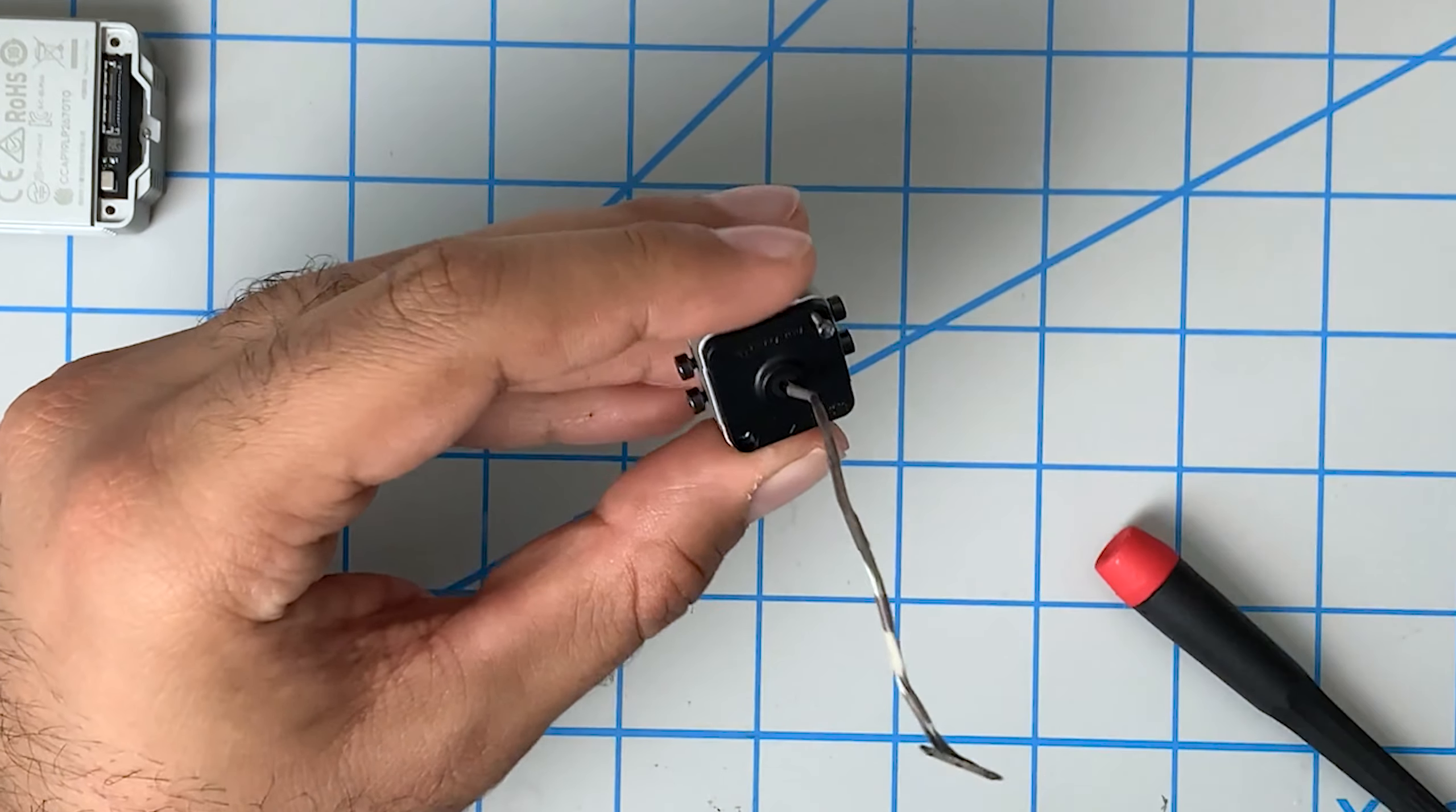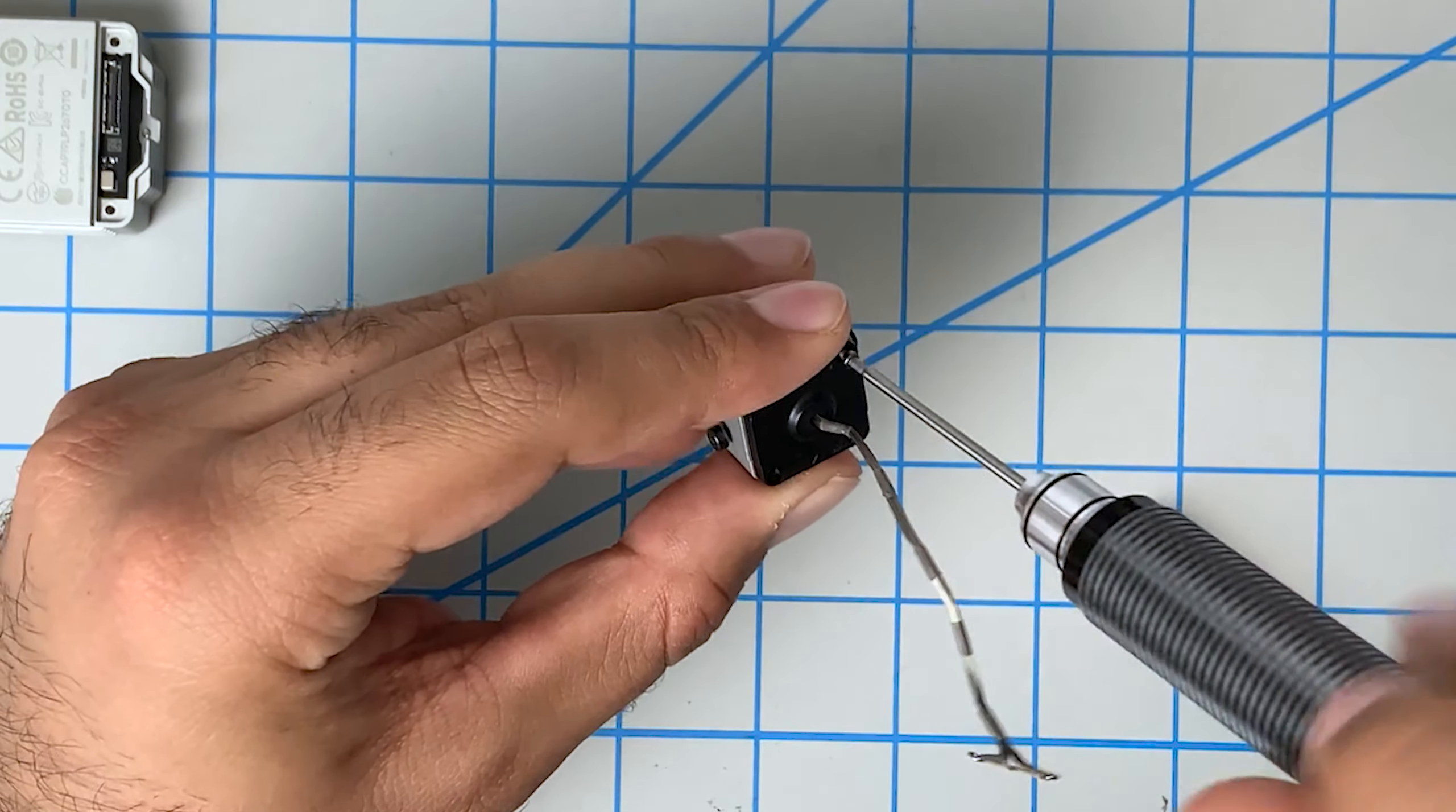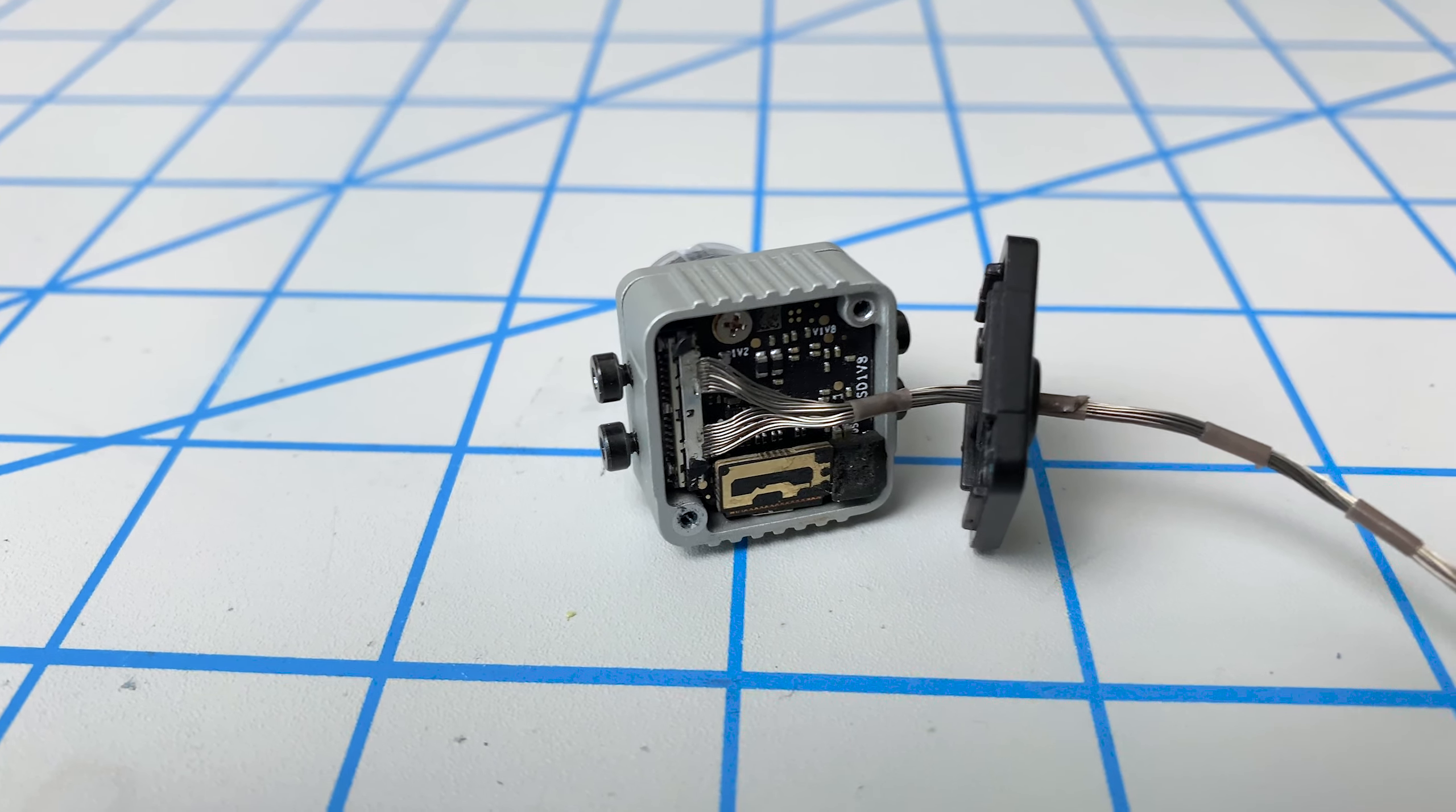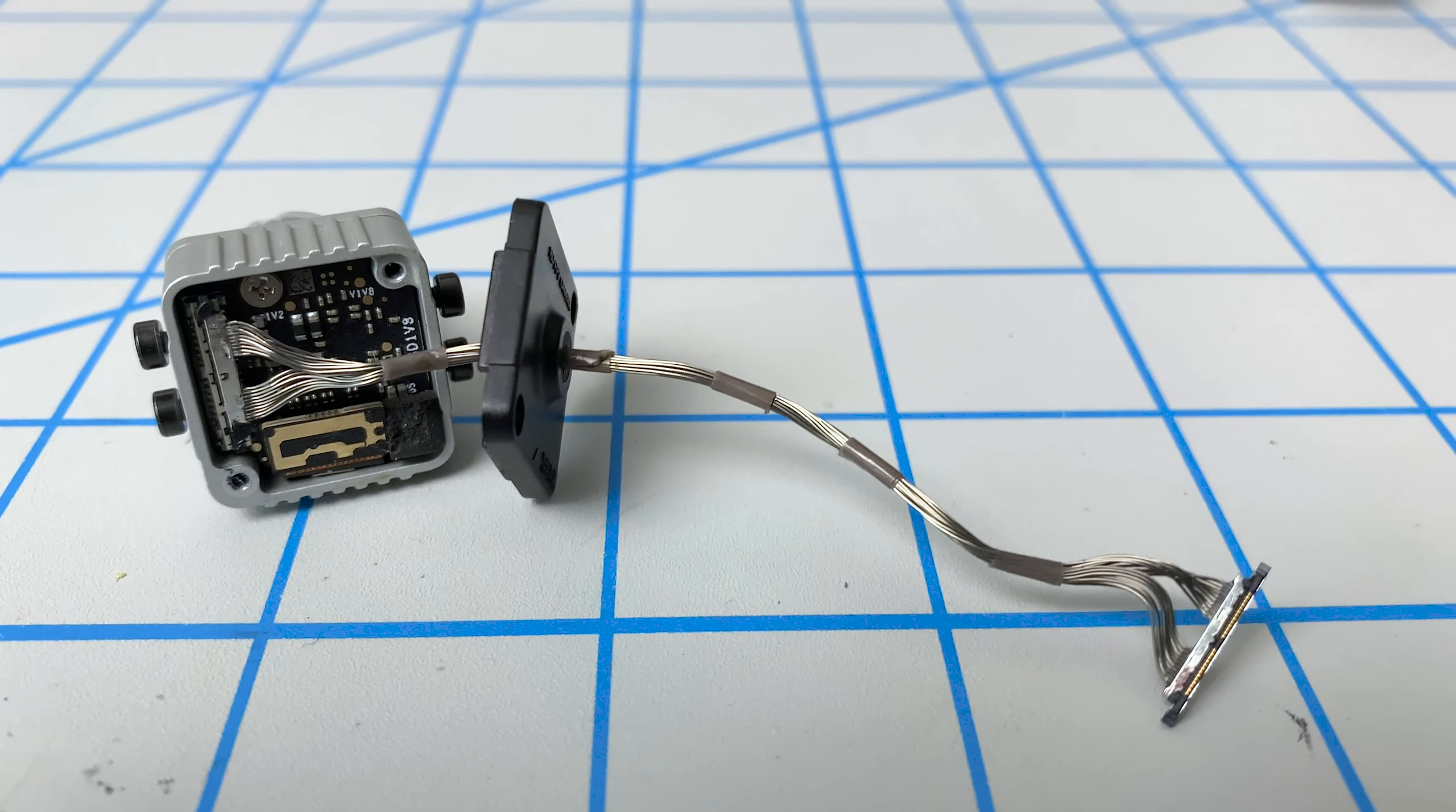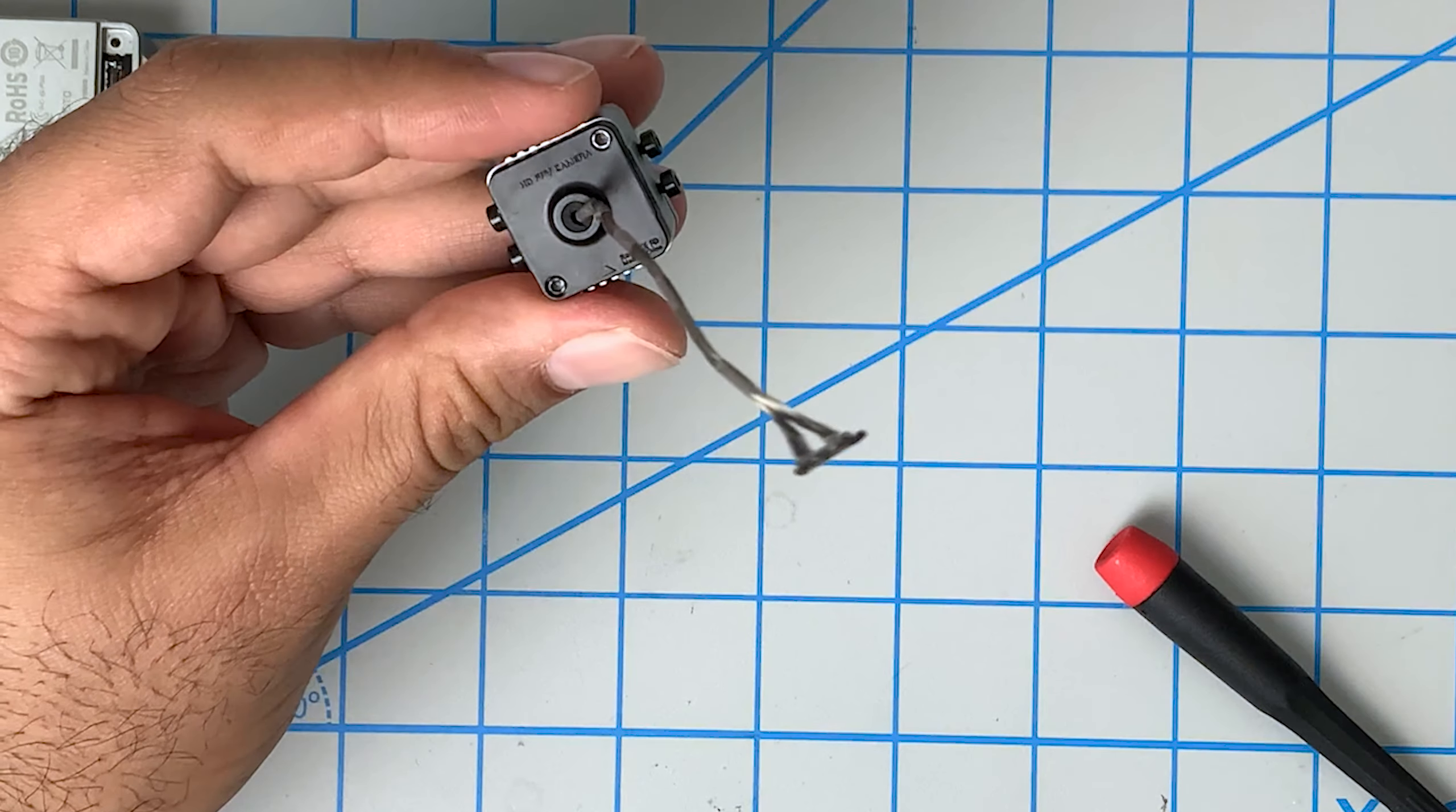So probably a good idea to put a little bit of Loctite on these screws. They do go into metal. Okay, the camera side is done.